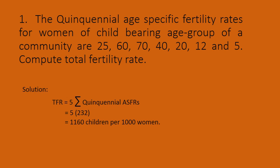The multiplier 5 is used because each age group spans 5 years — for example, 15, 16, 17, 18, 19. So TFR = 5 into 232, where 232 = 25 + 60 + 70 + 40 + 20 + 12 + 5. Therefore TFR = 5 × 232 = 1160.